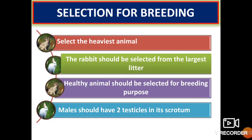When selecting animals for breeding, we should select the heaviest animal from the largest litter, and only healthy animals should be selected. The first three points apply to both male and female. For males, they should have 2 testicles in their scrotum. The testicles start to descend from the body cavity into the scrotum at 10 weeks of age.